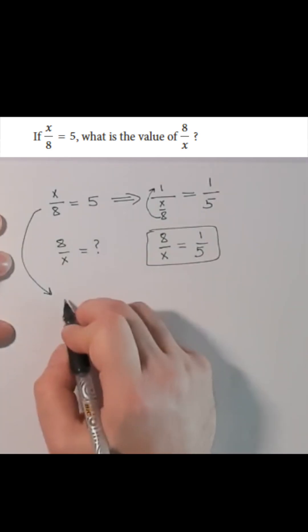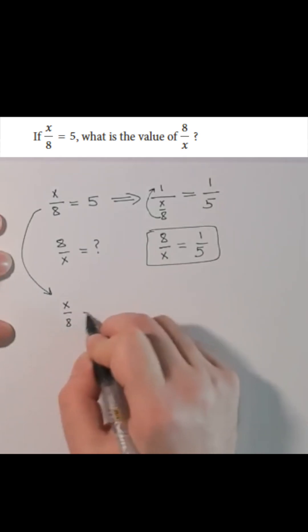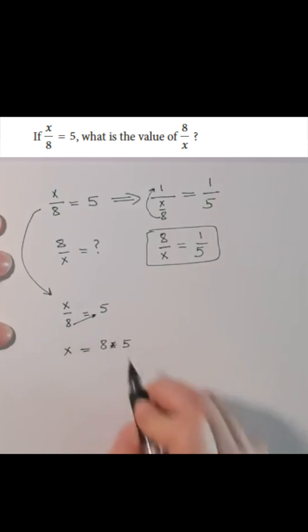Or do a cross multiplication. x over 8 is equal to 5, so x will be 8 multiplied by 5.